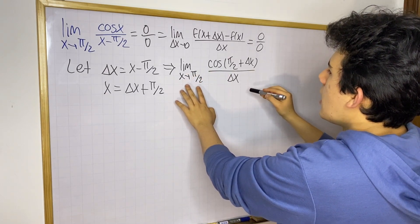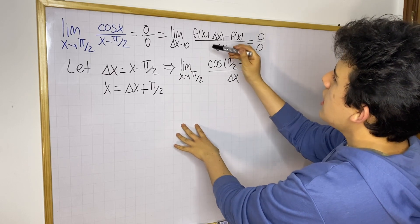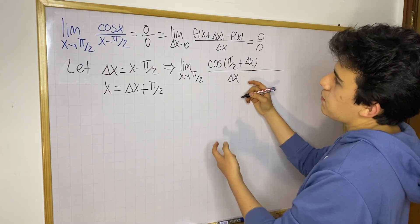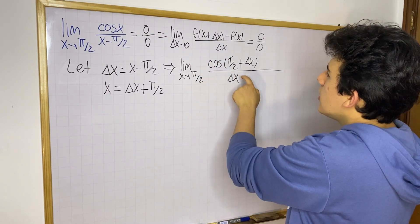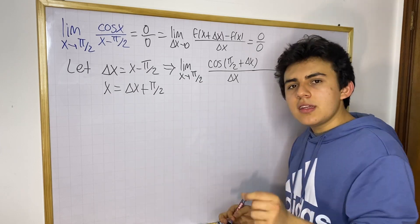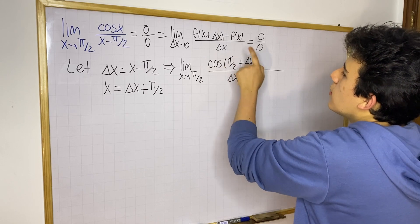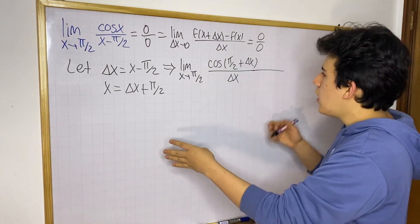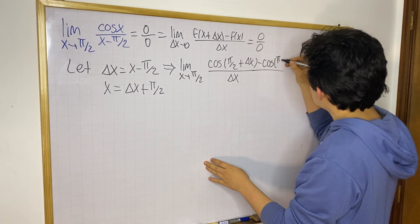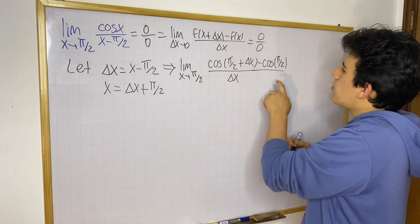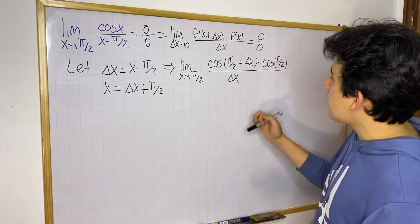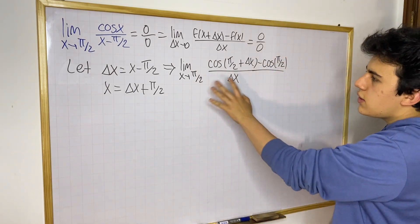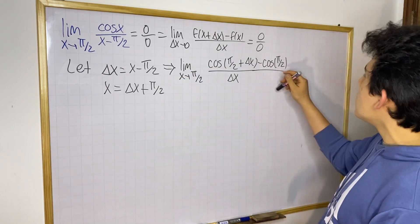What are we still missing to make this limit look as much as possible like the difference quotient? We're missing an initial value — a base point. In the difference quotient, the base point is x, and in this case x is going to be pi over 2. So the other term we need is the function evaluated at that base point: cosine of pi over 2, which we subtract. We're lucky because cosine of pi over 2 equals 0, so subtracting it doesn't change anything.